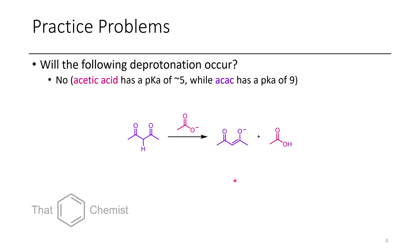In this next problem, I want you to determine whether or not acetate is able to deprotonate acetyl acetone, which is commonly referred to as ACAC, especially by inorganic chemists. In this case, this should not occur because acetic acid has a pKa of 5, while ACAC has a pKa of 9 — that's 4 orders of magnitude difference.